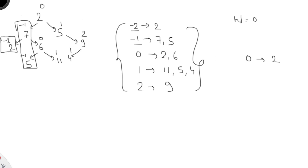We then go left recursively, passing height minus 1. For minus 1, there is no value yet, so we initialize a list and put value 7. Going further left to minus 2 level, again no entry exists in the map, so we put value 2. We continue with the left-right combination traversal.